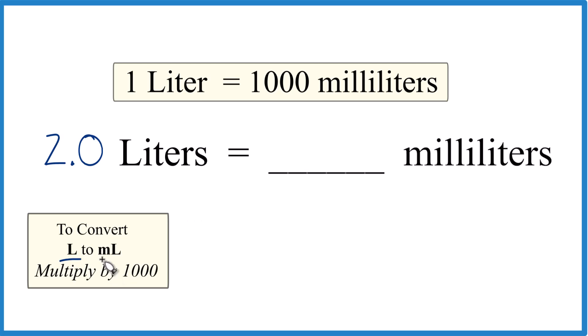When we go from liters to milliliters, we just multiply by 1,000. But like this, 2.0 liters times 1,000, and that's 1,000 milliliters per liter. So mL over L.